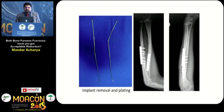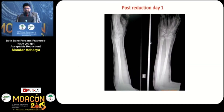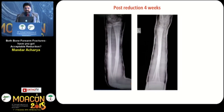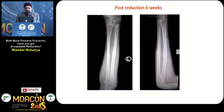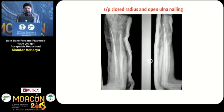The nails were removed and it was treated by plating. Another case — a 12-year-old who had a fall while playing football. A beautiful cast index with supracondylar mold and very nice reduction is seen, with the interosseous space well maintained. Post-reduction check x-ray on day seven confirmed no loss of reduction. At four weeks and six weeks post-op the cast was removed, but 2.5 months after plaster removal the child had another fall and a refracture, which was treated by nailing.